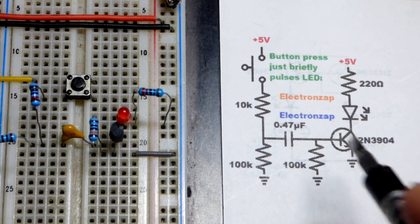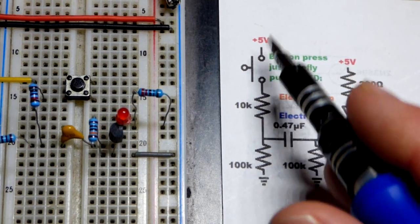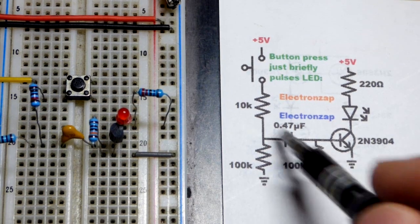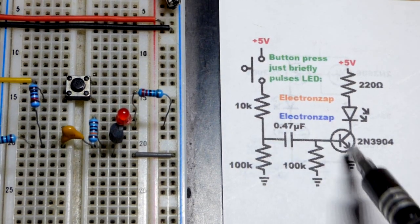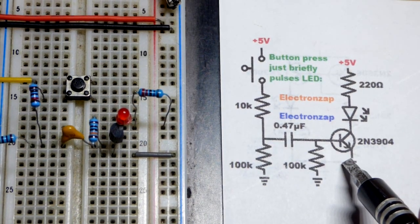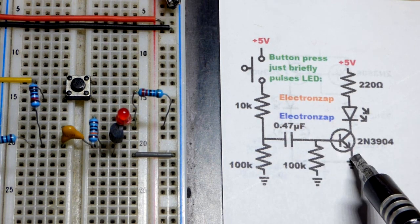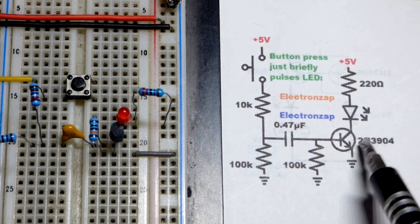It's going to build up a charge and once it equalizes to the supply voltage minus the diode drop, then it's not going to have current flow anymore right there. So that's why we get a pulse. We get that brief amount of current so it's a low amount of current.